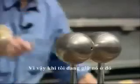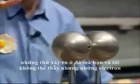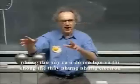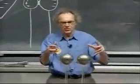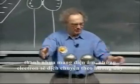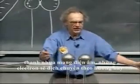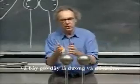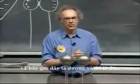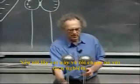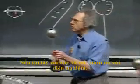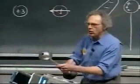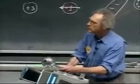So as I was holding it there, things were going on in there that you and I couldn't see. But electrons — the rubber rod is negative — electrons were shifting in this direction, and this is now positive and that is now negative. If I take this one and I touch it with the electroscope, you clearly see that there is charge on this.